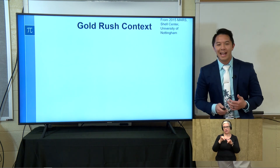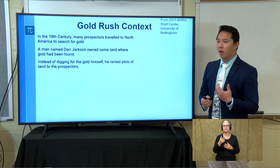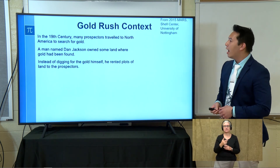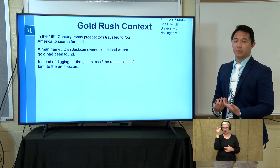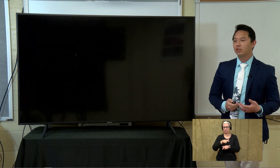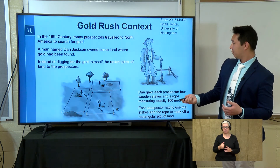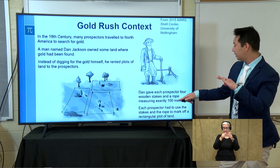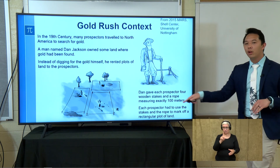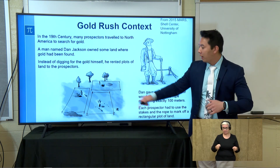The context for the Gold Rush task sets us in the 19th century — around the 1840s and 1849, when a lot of people were rushing to North America in search of gold. A man named Dan Jackson owns land out west, but instead of digging for gold himself, he's renting out plots on his property to prospectors. He gives each prospector four stakes and exactly 100 meters of rope to mark off their individual plot of land.